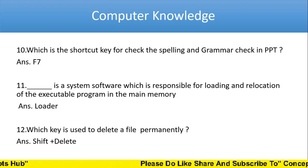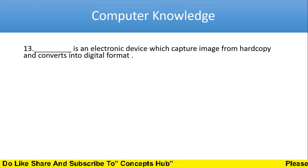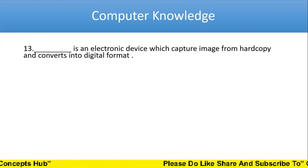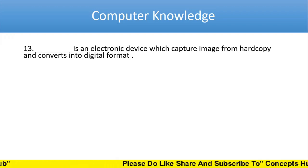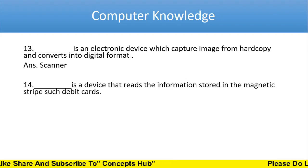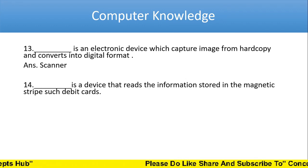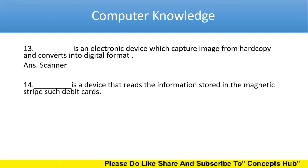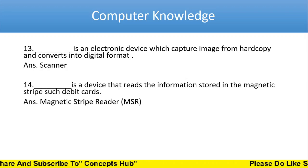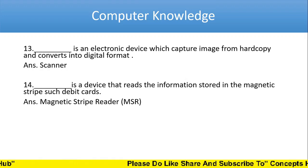Next: dash is an electronic device which captures an image from hard copy and converts it into digital form. The answer is scanner. Next question: dash is a device that reads the information stored in the magnetic strip such as debit cards and credit cards. The answer is Magnetic Strip Reader. The full form MSR is also very important.